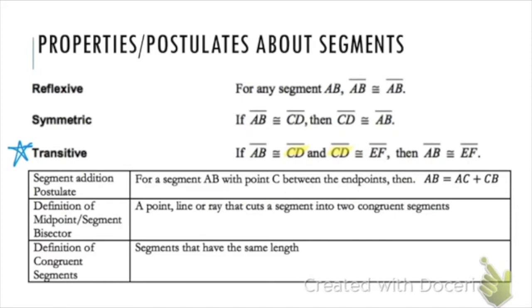Now look at these postulates and definitions from unit one that we're going to use in our proofs. The segment addition postulate says if a segment is cut into parts, the parts add up to the whole segment. The definition of a midpoint or segment bisector says it cuts the segment into two congruent pieces. The definition of congruent segments says segments are the same length.